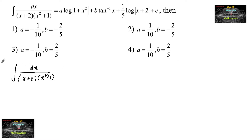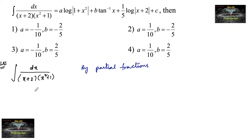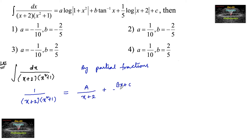Consider the left-hand side: integral of dx upon (x+2)(x²+1). Let us solve it by partial fractions. So 1 upon (x+2)(x²+1) can be written as A/(x+2) + (Bx+C)/(x²+1), since x²+1 is irreducible.